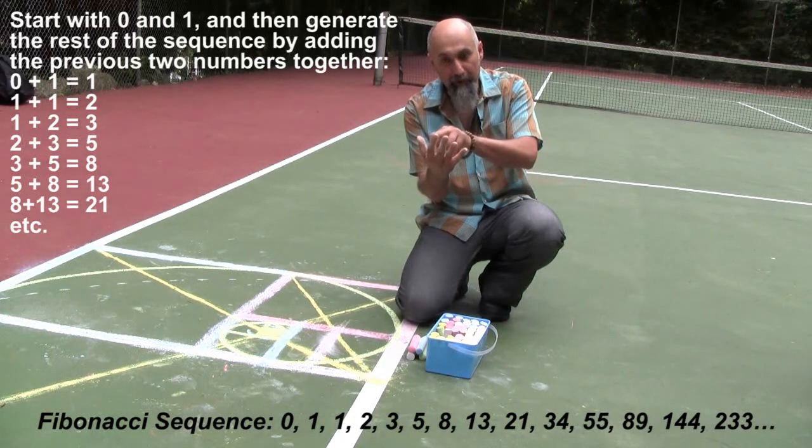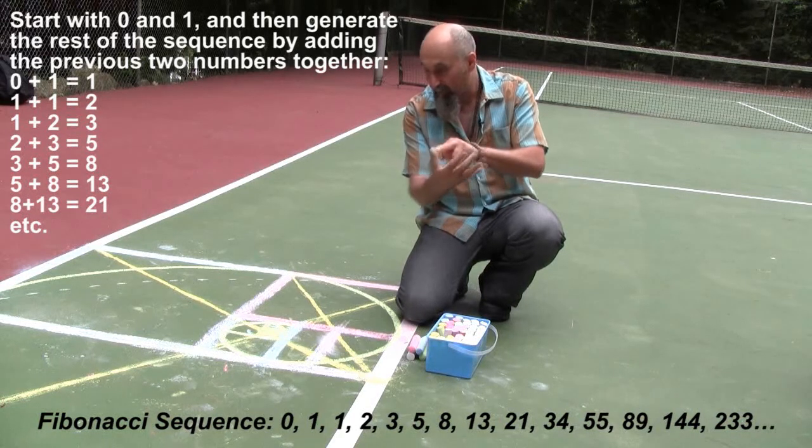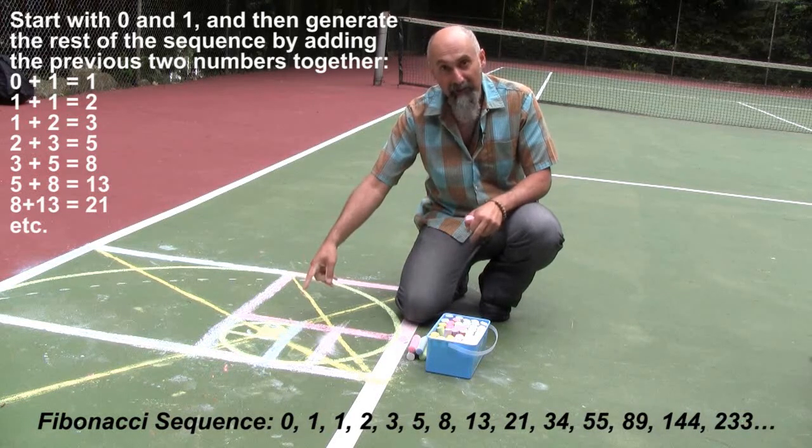One plus one is two. So you add these two numbers, which is one and two, to get the next number, which is three. And that's the Fibonacci sequence right here.